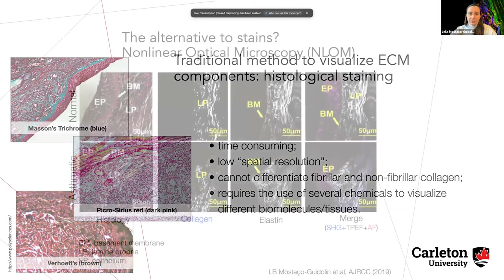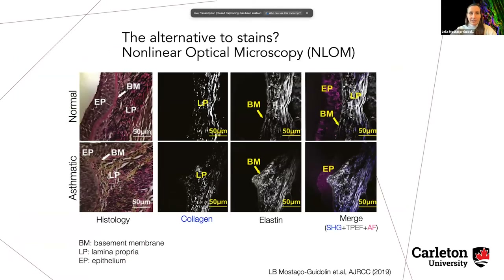My research is mostly focused on an alternative way to look at tissue, based on what's called nonlinear optical microscopy. The idea is we have a special microscope that uses laser light, and without having to add any chemicals or prepare the tissue in any way, we can actually get information about the structure. On the left panel, we have a section — a very thin slice of lung tissue, one from a normal donor, the other from an asthmatic. On the right side, all those images are from this special type of microscopy, showing collagen, elastic fibers, and a merged image of both structures.